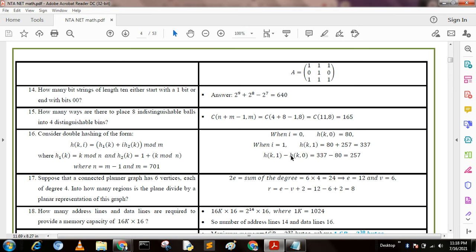Next question: Suppose that a connected planar graph has 6 vertices, each of degree 4. Into how many regions is the plane divided by a planar representation of this graph? From the formula, 2E = sum of degrees, that is 6 × 4 = 24, so E = 12.